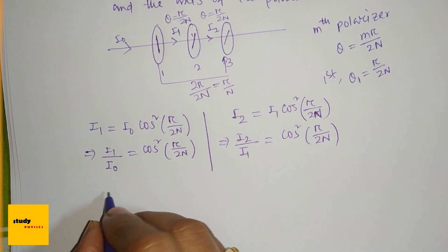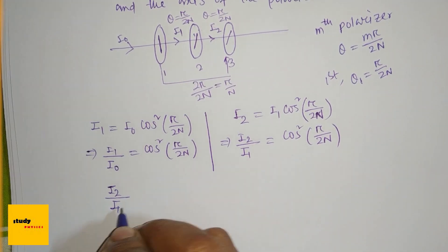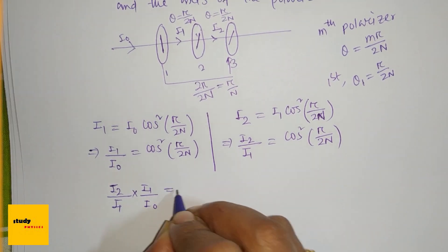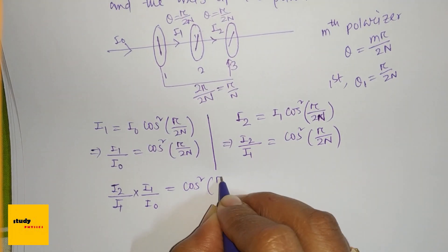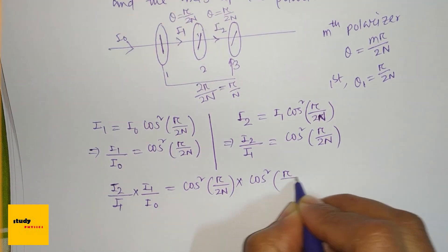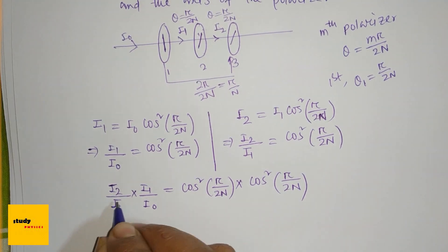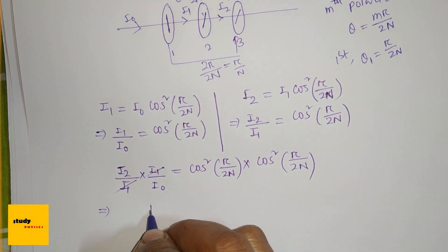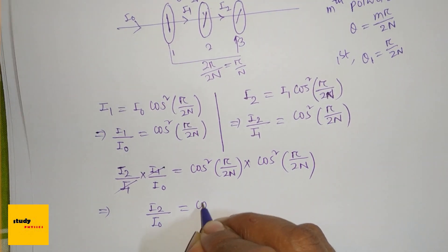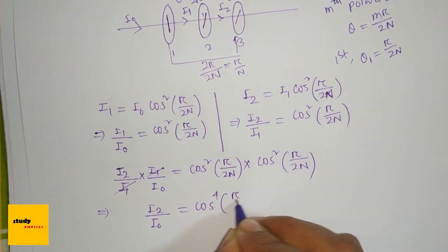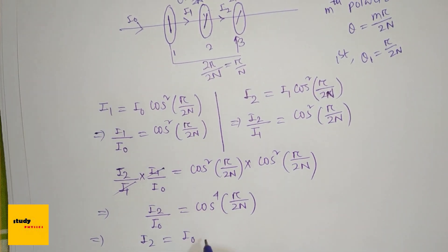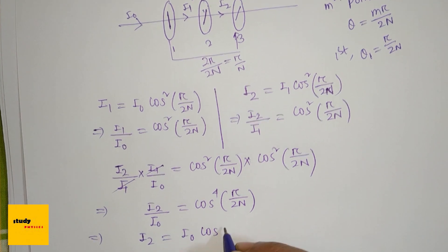So I2/I1 · I1/I₀ = cos²(π/2n) × cos²(π/2n). The I1 terms cancel out, so I2/I₀ = cos⁴(π/2n), giving I2 = I₀ cos⁴(π/2n).